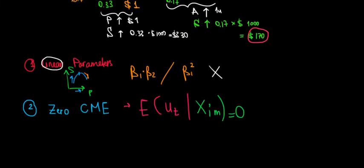So over here, any error at any point in time must have an expected value equal to zero, must be randomly distributed, uniformly distributed across the regression line for any given independent variable.